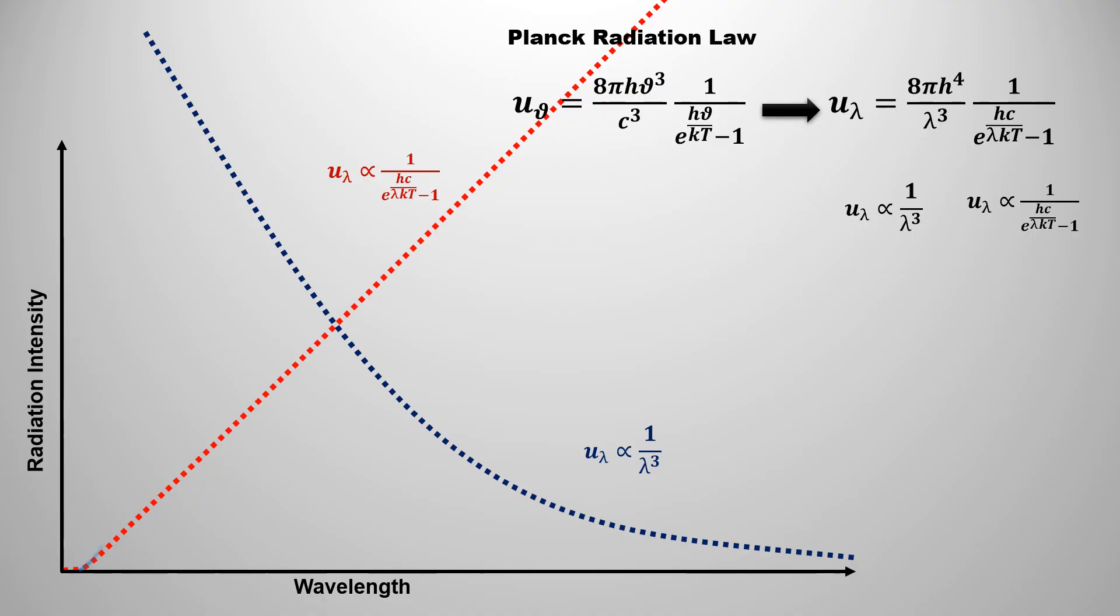When we merge both the graphs, then at the low wavelength, energy density follows the curve of the exponential term, because at this wavelength, exponential term is dominating. But as the wavelength increases, the effect of 1 by lambda to the power 5 starts decreasing. At a particular wavelength, both curves are equally dominating. At this wavelength, black body emits maximum radiation.